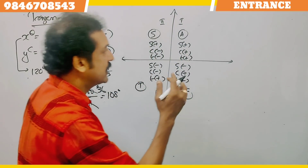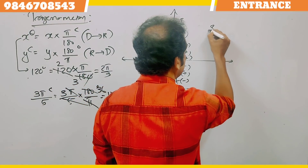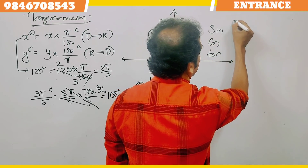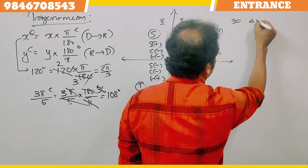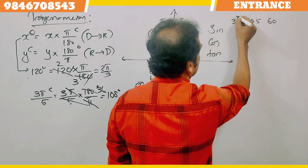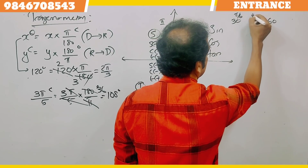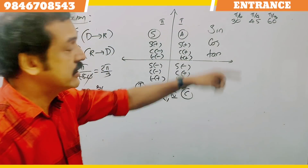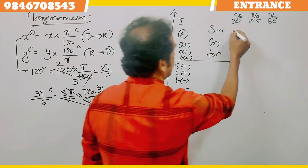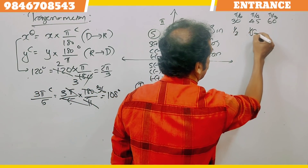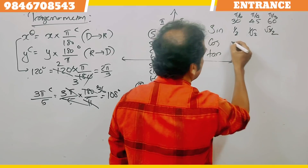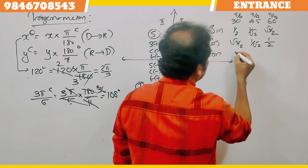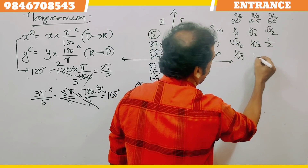In the table of values, for angles in degrees and radians: sin values are 1/2, 1/√2, √3/2; cos values are √3/2, 1/√2, 1/2; and tan values include 1/√3 and 1 among the standard angles such as π/4 and π/3.